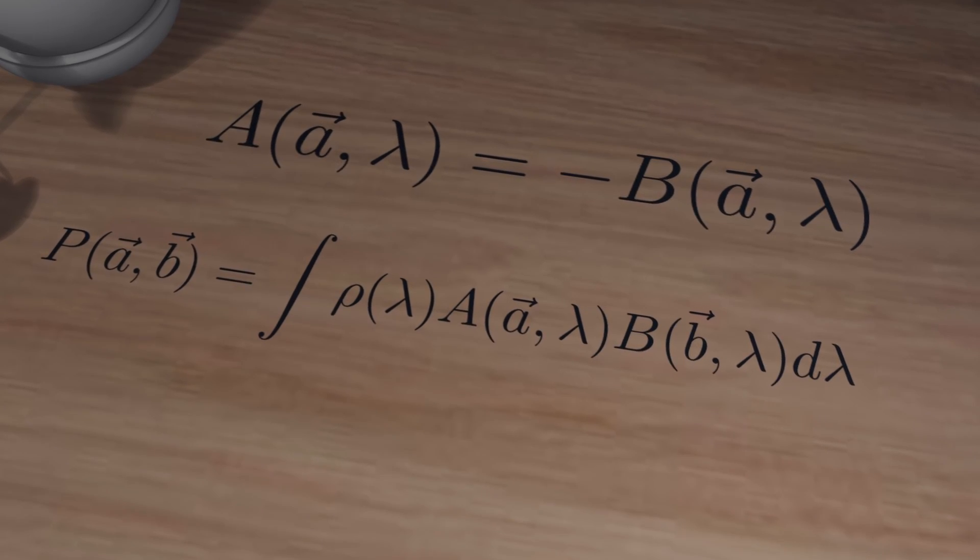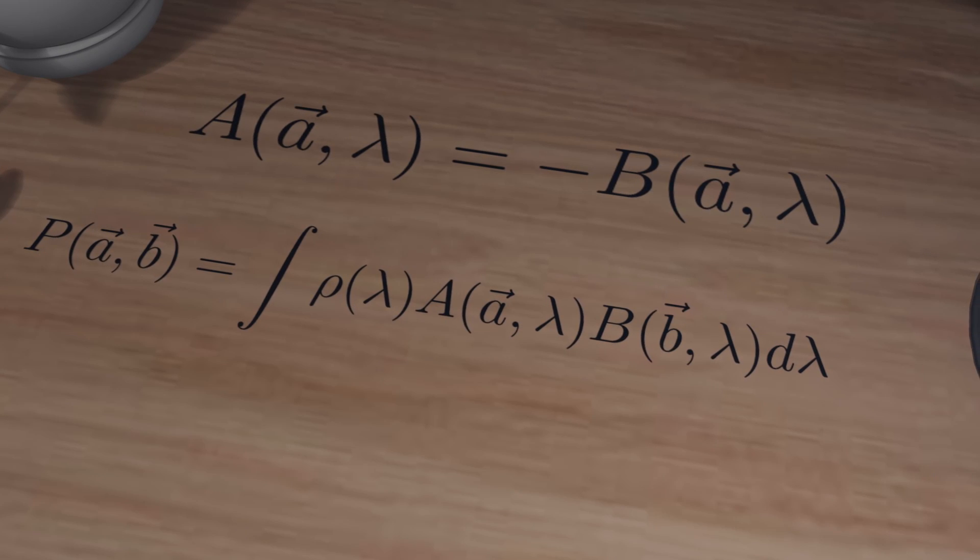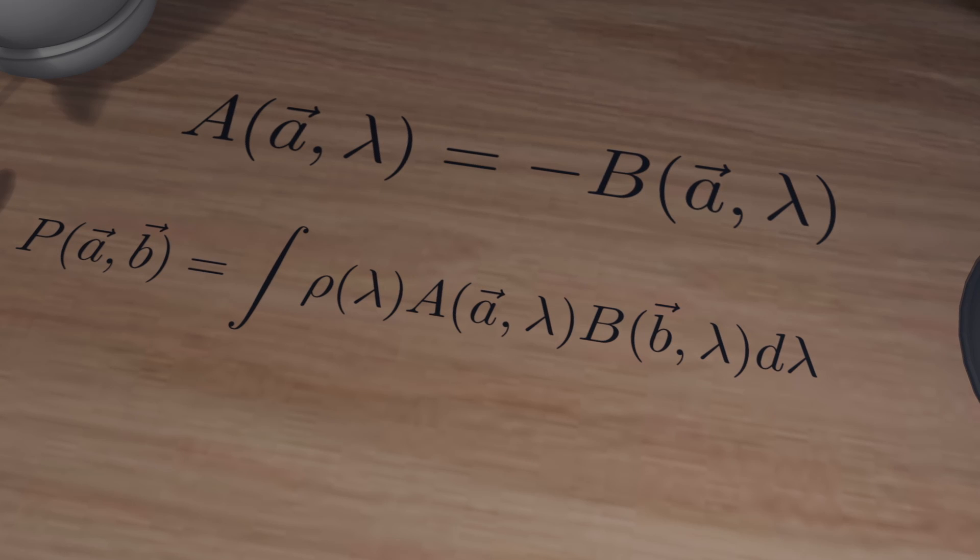Here, Rho of Lambda is any PDF of the hidden variables. We assume only that the PDF integrates to 1, without imposing any restrictions on its complexity.